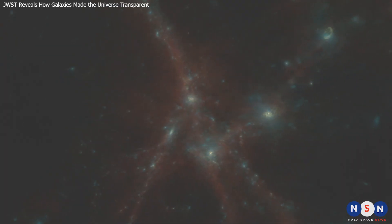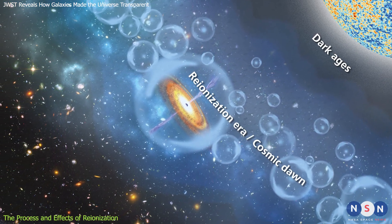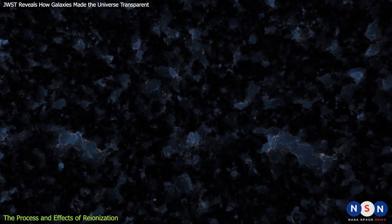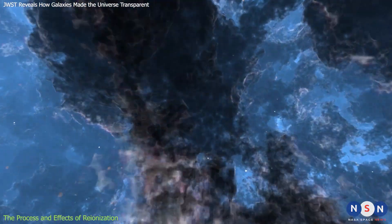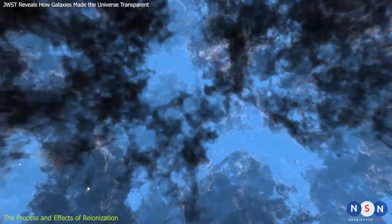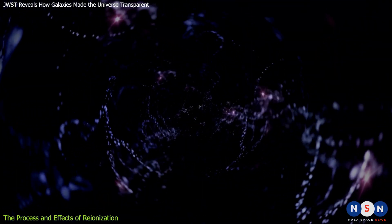One of these phases is called re-ionization, and it is one of the most important events in the history of the universe. Re-ionization refers to the process by which the intergalactic medium was transformed from being mostly neutral to being mostly ionized. This happened when ionizing photons, or particles of light with enough energy to ionize hydrogen atoms, escaped from galaxies and penetrated into the intergalactic medium.